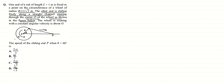The wheel is rotating with constant angular velocity ω. As it rotates, point P moves along the circumference while the rod length remains constant. The question asks for the speed of the sliding end P when the angle θ equals 60 degrees.